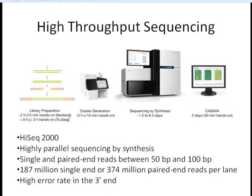Today's webinar will focus on sequence from Illumina machines — the Genome Analyzer 2 or the HiSeq machines. All three allow for highly parallel sequencing by synthesis. You can do single or paired-end reads between 50 and 100 base pairs. From one lane of the HiSeq 2000, you get between 187 million and 374 million reads depending on single or paired-end. An important thing to note is that there's a high error rate towards the 3' end of these reads.